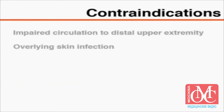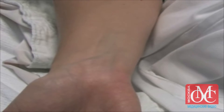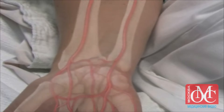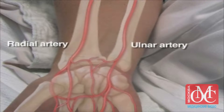Radial arterial puncture is contraindicated in the presence of a known deficiency of collateral circulation to the distal upper extremity. Some physicians advocate for the use of the modified Allen test to assess the adequacy of collateral circulation of the radial artery by the ulnar artery.